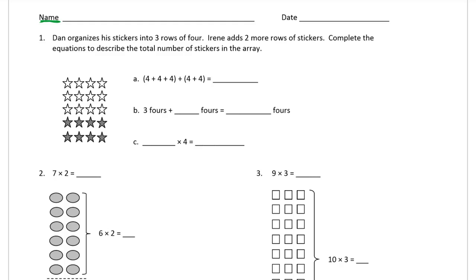Number one: Dan organizes his stickers into three rows of four. There's the array for it right here. Dan has three rows of four — those are Dan's. And Irene adds two more rows of stickers — those are hers. Complete the equations to describe the total number of stickers in the array. Here we have four plus four plus four — that's three rows of four, those are Dan's stickers.